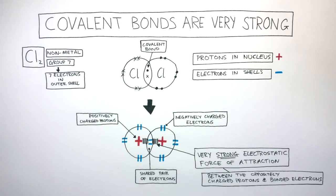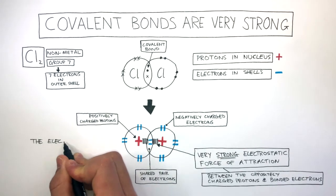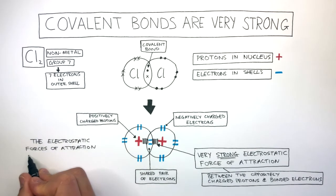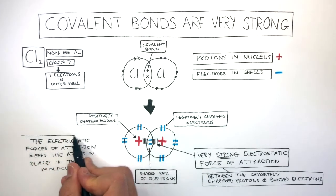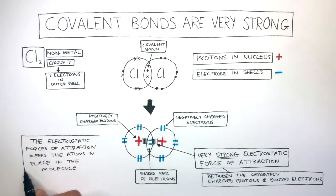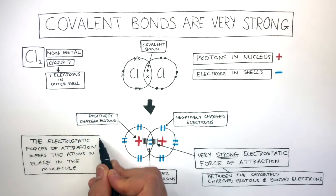Electrostatic forces of attraction always exist between oppositely charged ions or oppositely charged particles such as electrons and protons. The electrostatic forces of attraction keep the atoms in place in the molecule. They are very strong and require a lot of energy to break.